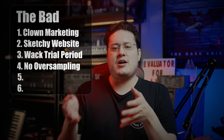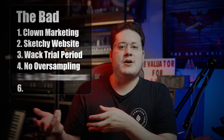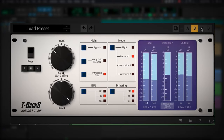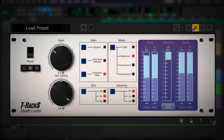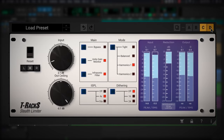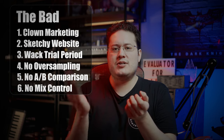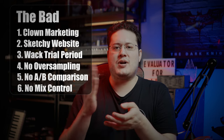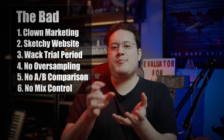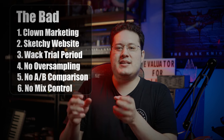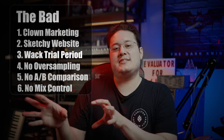My last two issues with the God Particle: there is no A/B comparison option, so if you want to make two slight tweaks and hear the differences, that option is not available within the plugin. There's also no additional mix knob. I understand there's an amount control for how much processing you want, but it would be nice to have a separate mix knob so you can dial it in perfectly to how you want it to sound.